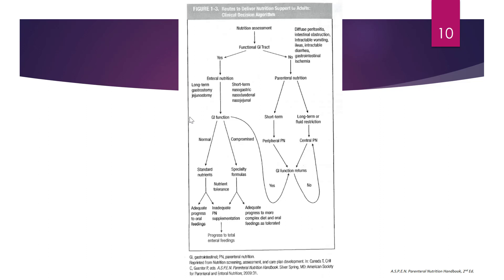This algorithm outlines how to choose the appropriate type of feeding. After completing a nutritional assessment including assessment of the GI tract, you determine whether the GI tract is functional or non-functional. If functional, the patient is indicated for enteral nutrition or tube feeding. If the GI tract is not functional, that may be a reason to use parenteral nutrition instead. Today we're focusing on enteral nutrition.